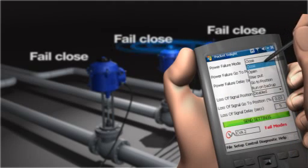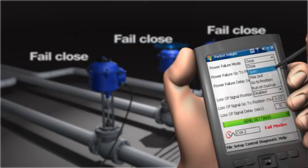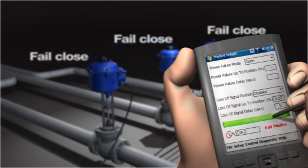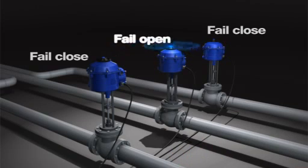But using a Bluetooth enabled device such as a PDA, the actuator can be reprogrammed to fail to an alternative position such as fail open.